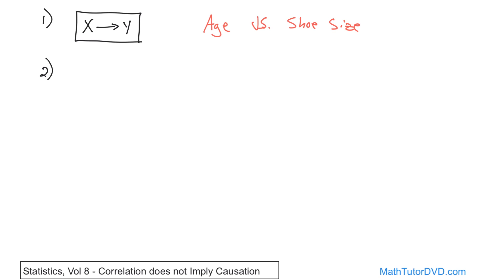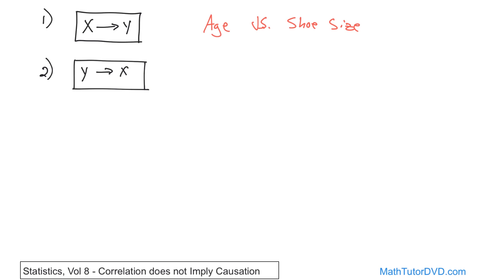This next case is more of one you need to watch out for. It's actually possible that you could be tricked, because Y could actually be causing X. That's the second case to watch out for. In the shoe size example, it's a one-way street — the age is influencing the shoe size, and the shoe size is not influencing the age. But in other cases, it's very possible that things could be going in reverse of what you conclude.